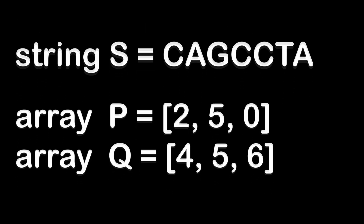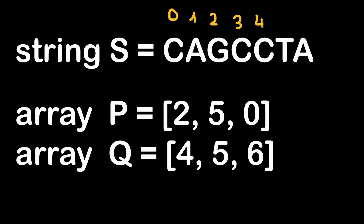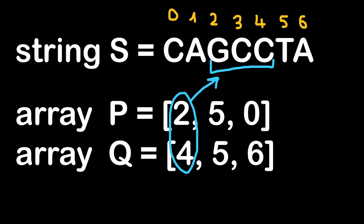For example, these are the indexes of each character in string S. If we consider the first positions of P and Q, we have 2 and 4. So we take the slice with indexes starting at 2 and ending at 4, both included in the slice as described by the problem. We have to search for the minimum impact factor occurring within the slice — here it's the letter C, which has impact factor 2. We save this number as the first element of our result array.